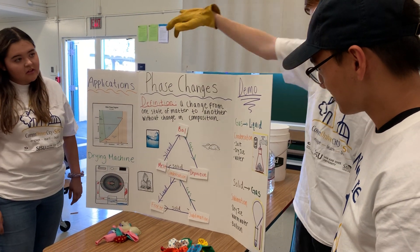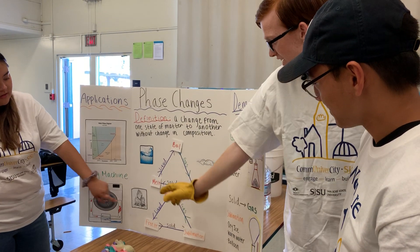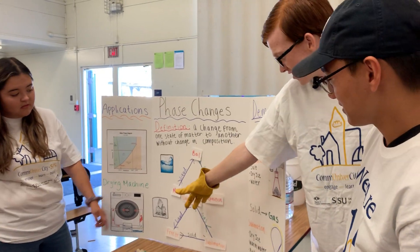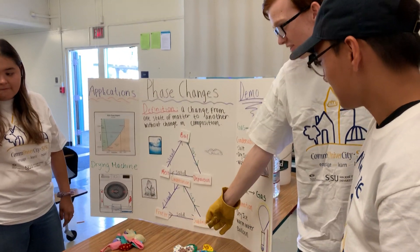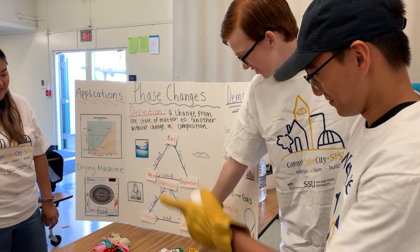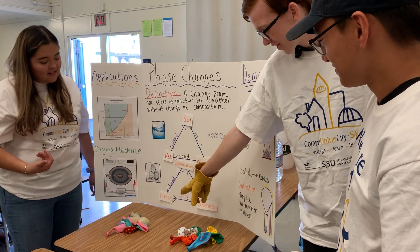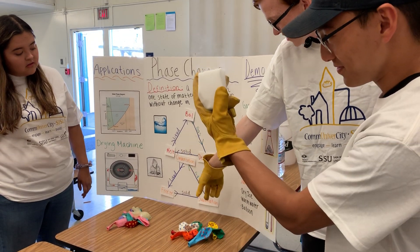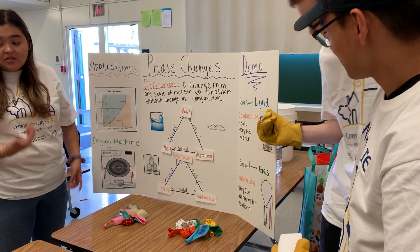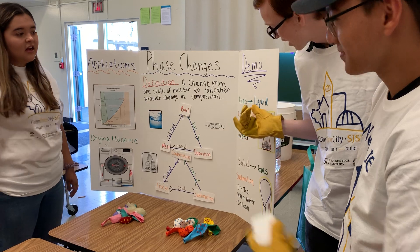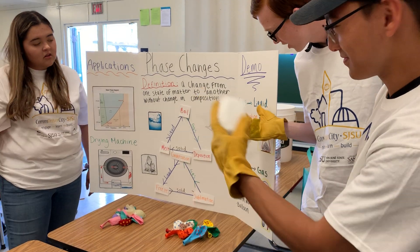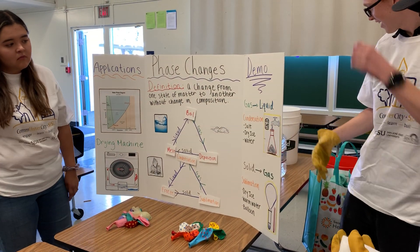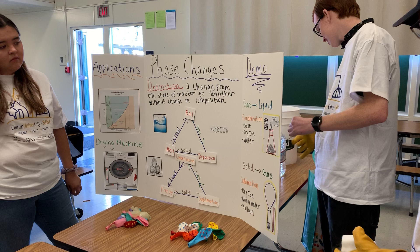Today we're going to be doing those last two. You guys have probably seen boiling water on a stove and melting. Today we're doing sublimation — going from a solid to a gas — and condensation, from a gas to a liquid, with dry ice. Up here is the condensation. We're going to have some salt water and some dry ice.